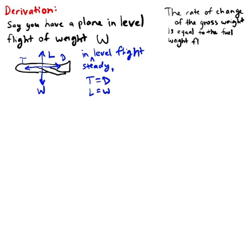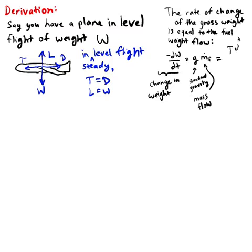And so the rate of change of the gross weight is equal to the fuel weight flow. So that's the parameter for a change in weight, standard gravity, the mass flow, and if you want to use more useful things, thrust over the specific impulse.